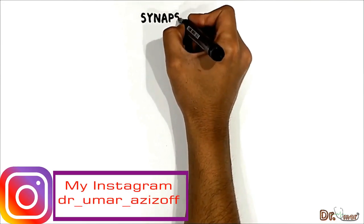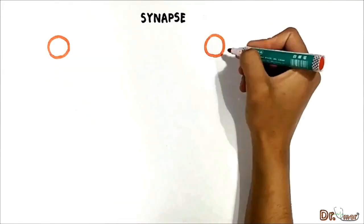In this video we will talk about synapses. A synapse is a site where an action potential is transmitted from one cell to another. We have two different types of synapses.